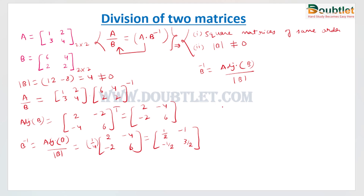Now we multiply matrix A with the inverse of B. So A divided by B equals matrix A = [1, 2; 3, 4] multiplied by B⁻¹ = [1/2, -1; -1/2, 3/2].